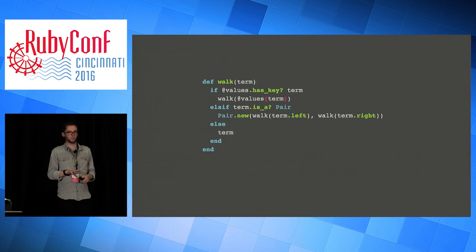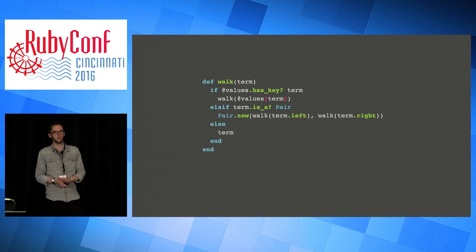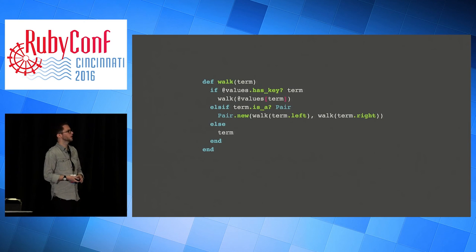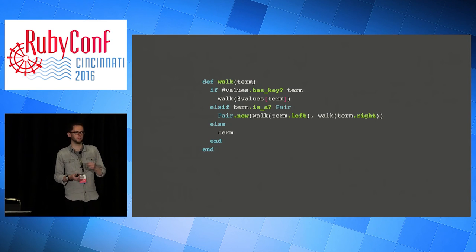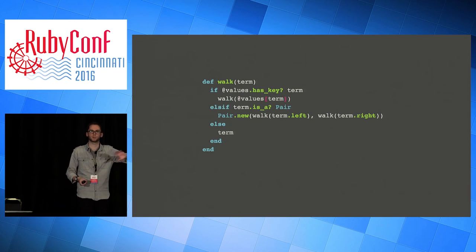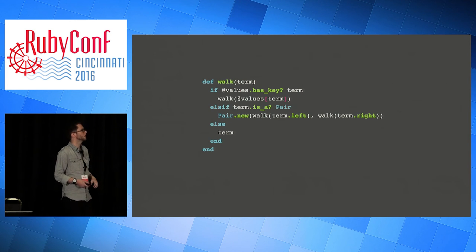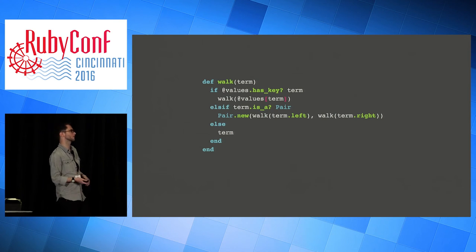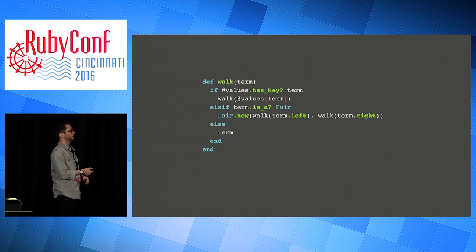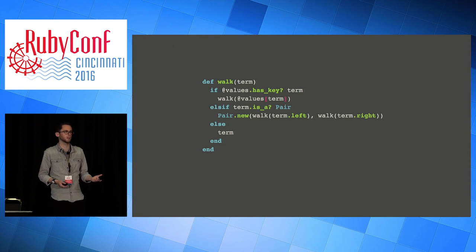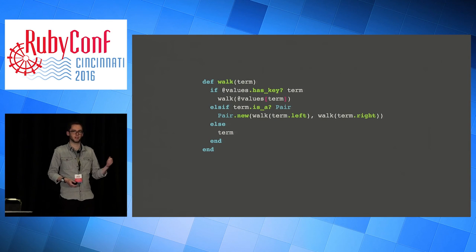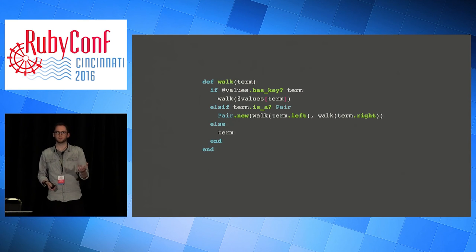Then there are a couple of operations built on those methods. One is called walking - like resolving the value of something. If a variable refers to another variable that refers to another variable, it will walk that whole chain and find you the ultimate thing at the end. If the term you're looking for is in your values list, you look that up and walk it again - it's a recursive process. If the term's a pair, you return a new pair by walking both sides of it. If you can't do either of those things, you just return the term itself. So if you pass in a variable and it isn't bound to anything yet, you get the variable back. But if it is bound to something, you get its value. You can use this to find out whether a variable has a value yet.